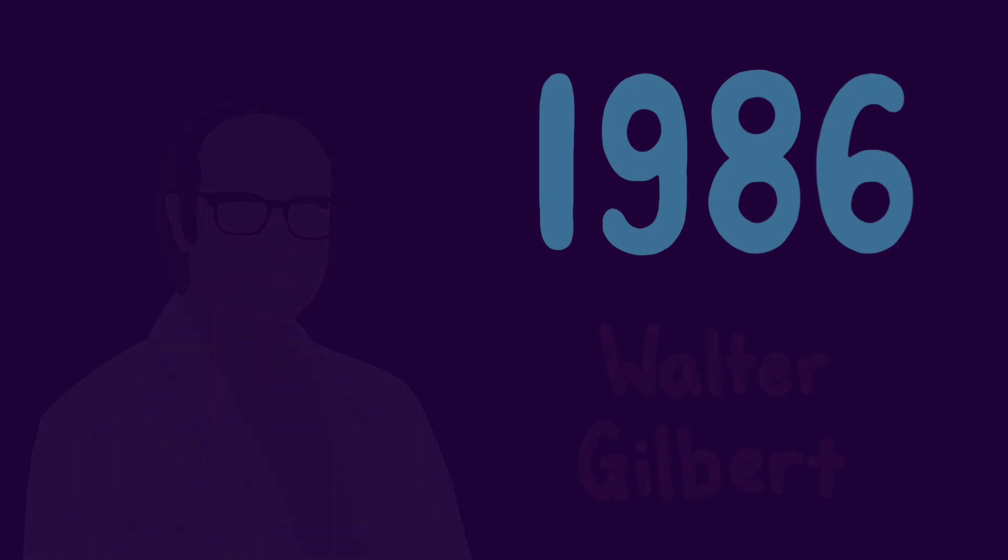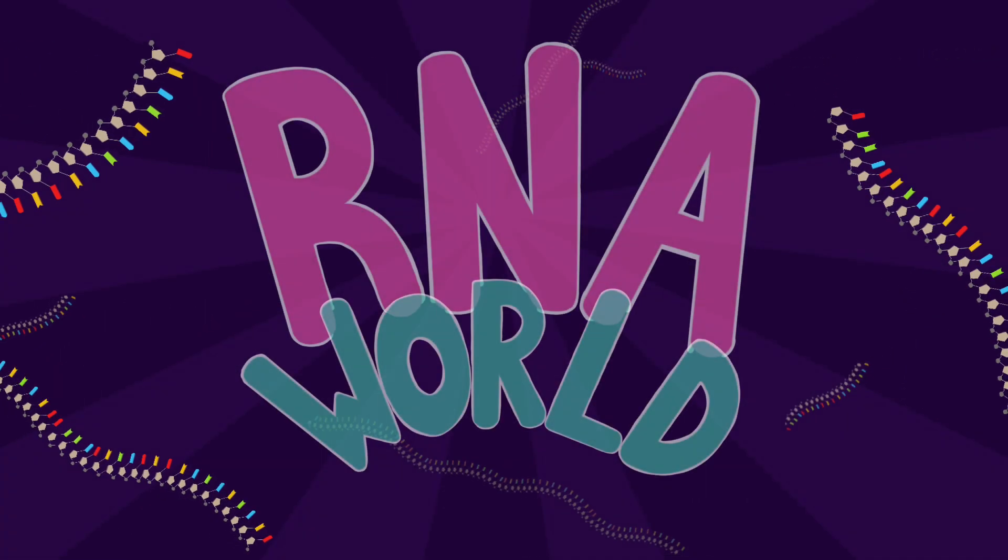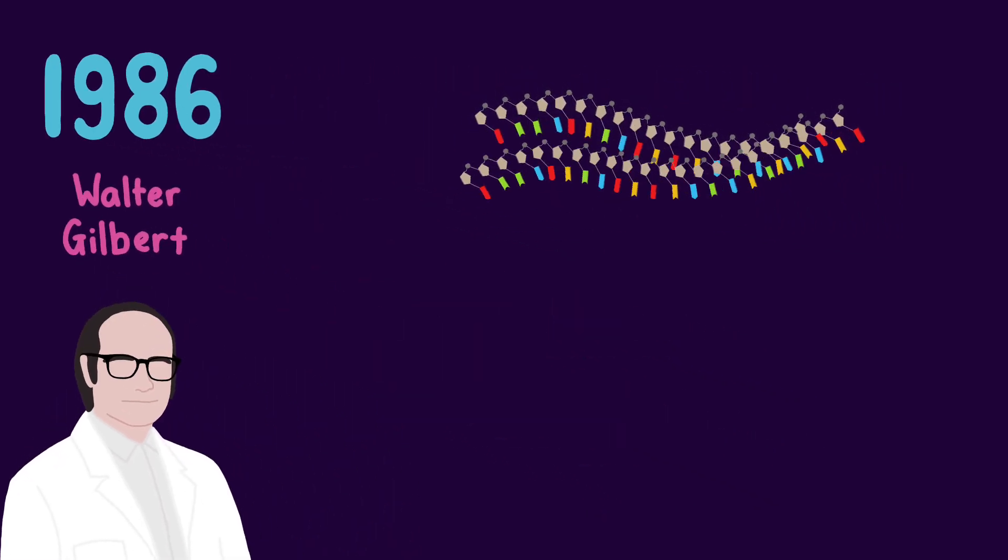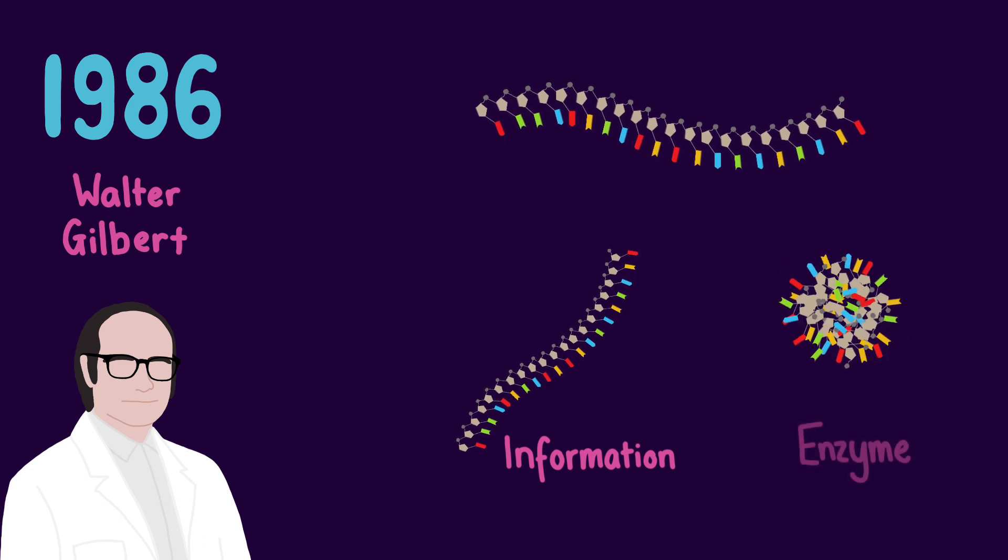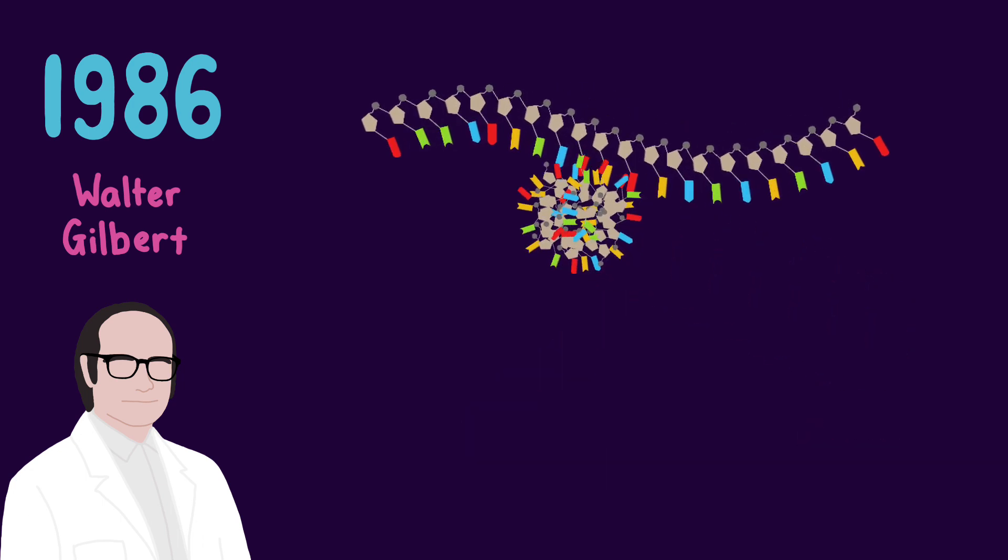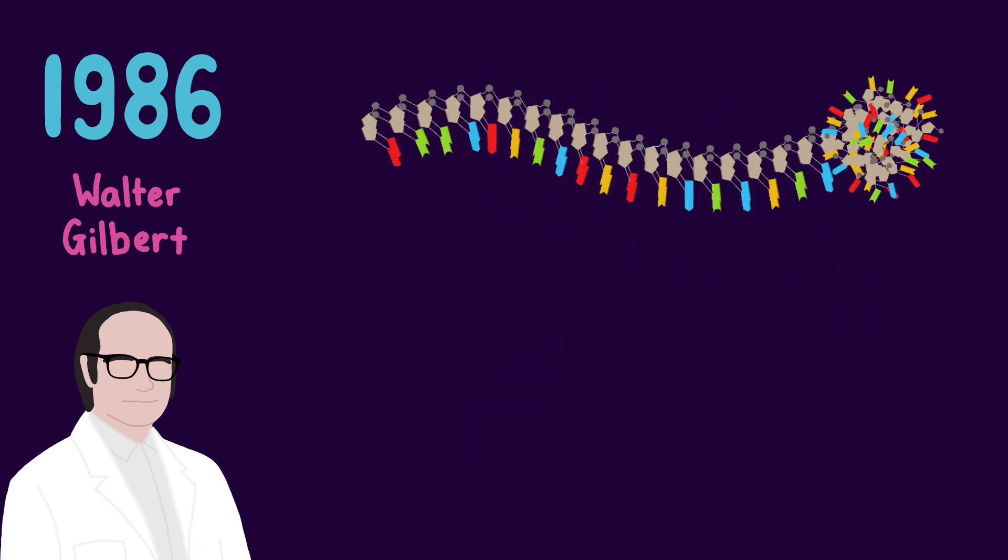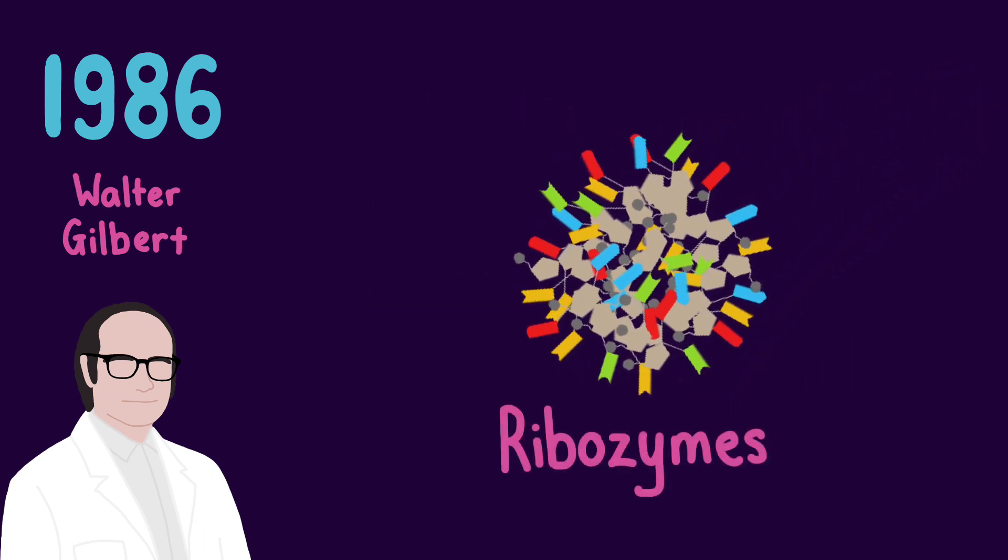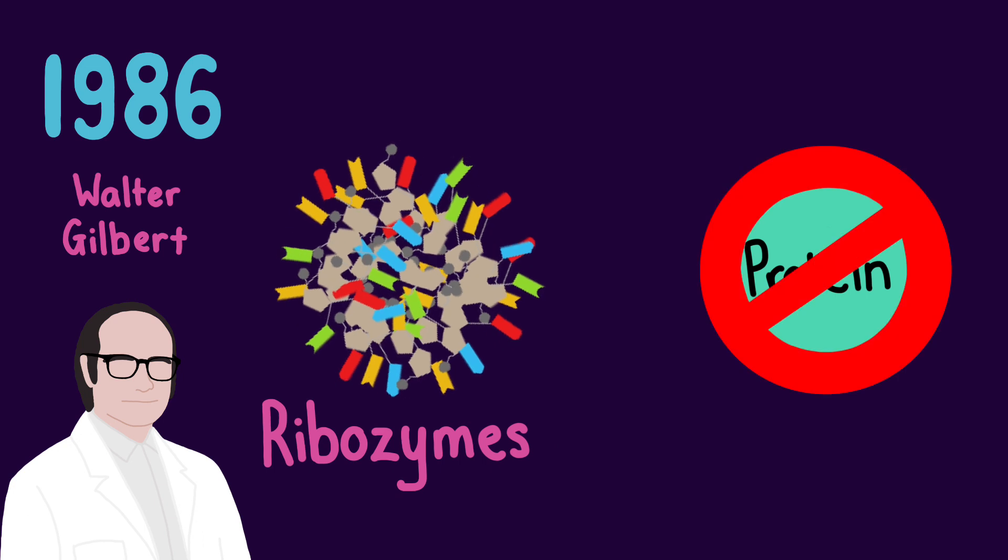However, it was in 1986 that Walter Gilbert gave life to the hypothesis of the RNA world. Like Rich, he proposed that RNA molecules capable of both genetic information storage and catalytic activity provided the enzymatic functions required for RNA replication, rather than proteins. These RNA enzymes, or ribozymes, eliminate the need for proteins at the beginning of life.